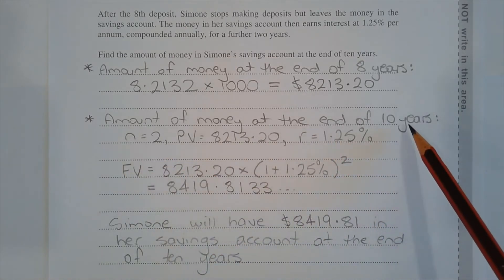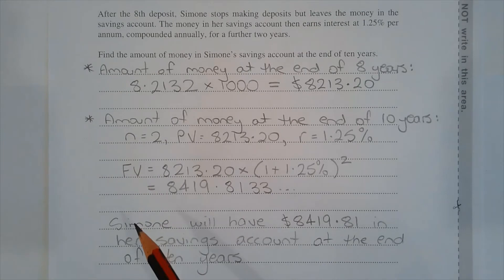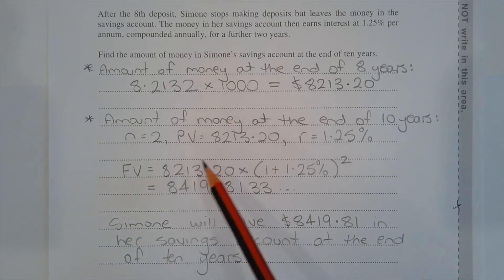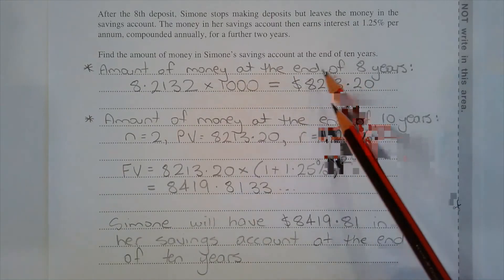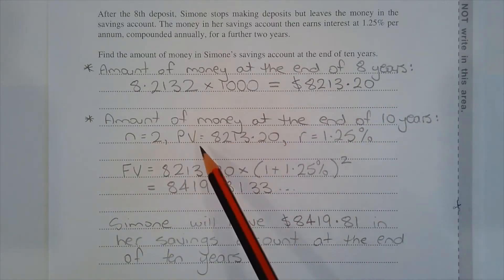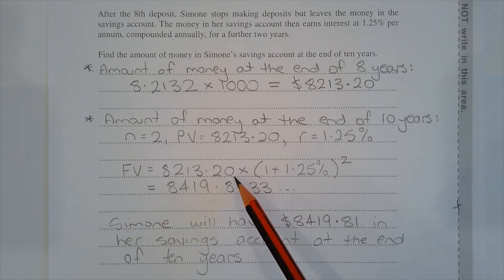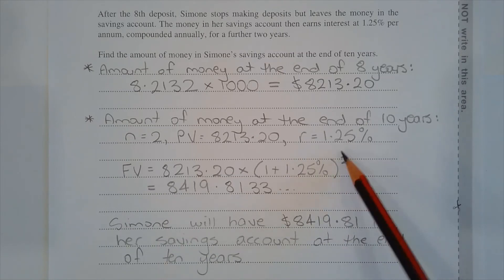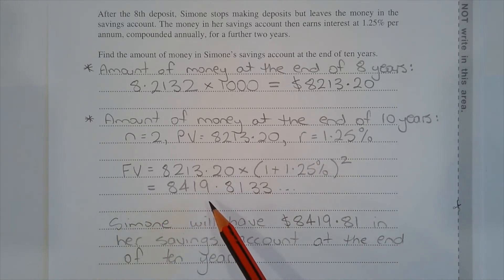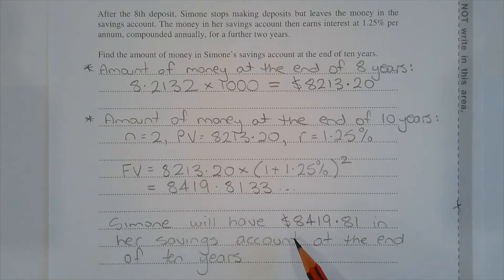For the amount of money at the end of 10 years, N equals 2, since it's two more years after the 8 years. The present value is taken from the result of the first part, which is $8,213.20 — that's how much Simone has in the account at the start of the two years where she's not making any deposits. The interest rate per annum is 1.25%. So the future value equals $8,213.20 multiplied by (1 + 1.25%) to the power of 2, which equals $8,419.81. Simone will have $8,419.81 in her savings account at the end of 10 years.